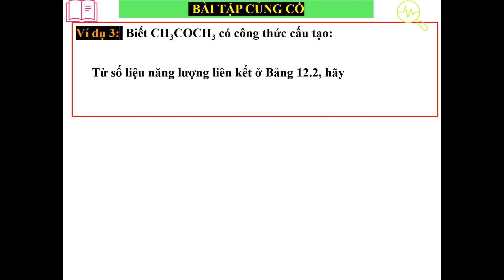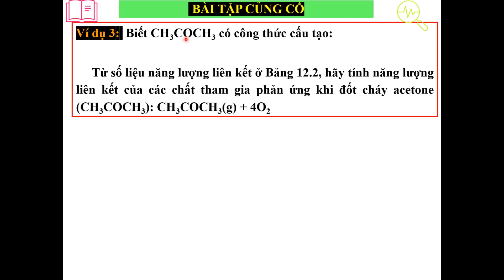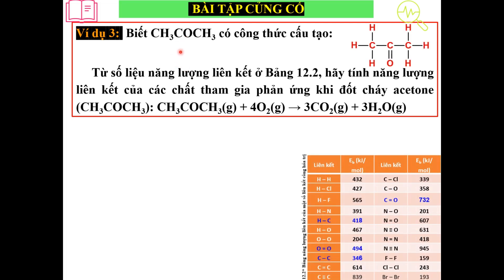Chúng ta đi qua ví dụ thứ 3. Chúng ta biết phân tử CH3-CO-CH3, đây chính là acetone. Đây là công thức cấu tạo của acetone. Từ số liệu của bảng 12.2, tính năng lượng liên kết tham gia phản ứng đốt cháy theo cái bảng số liệu dưới đây, đây chính là bảng 12.2.